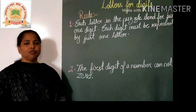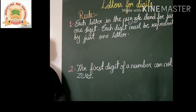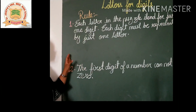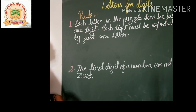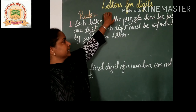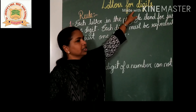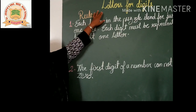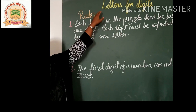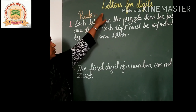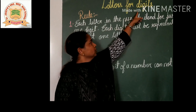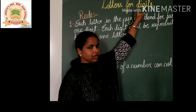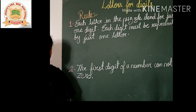Hello children, welcome to the third video of the lesson Playing with Numbers. Now we are going to learn letters for digits. Letters means alphabets from A to Z, and digits you know very well — those are from 0 to 9.